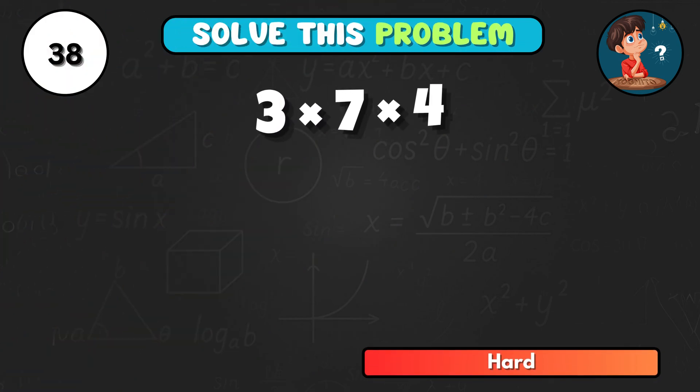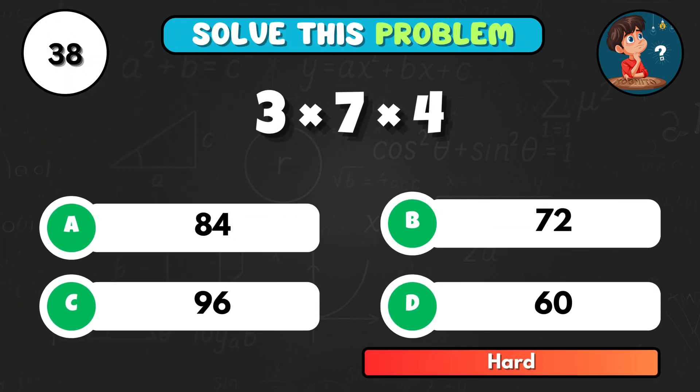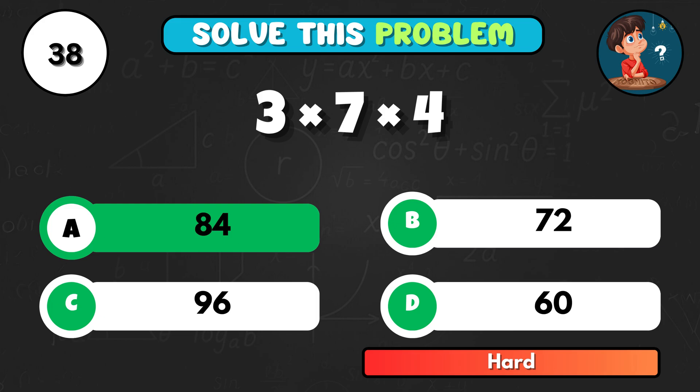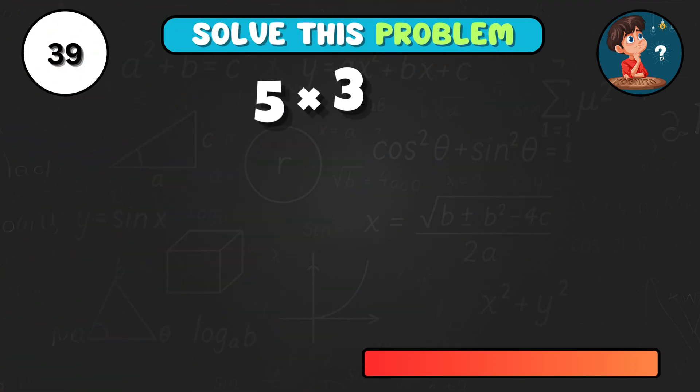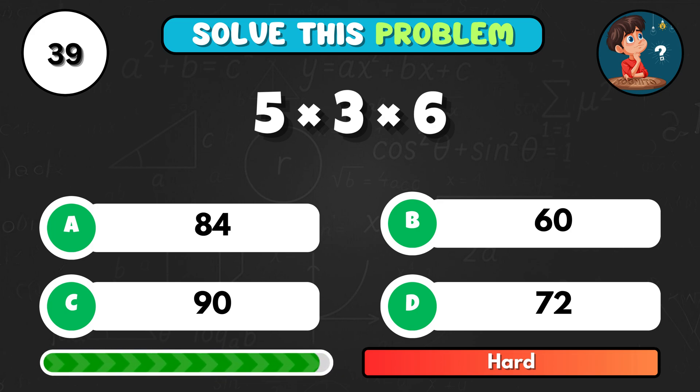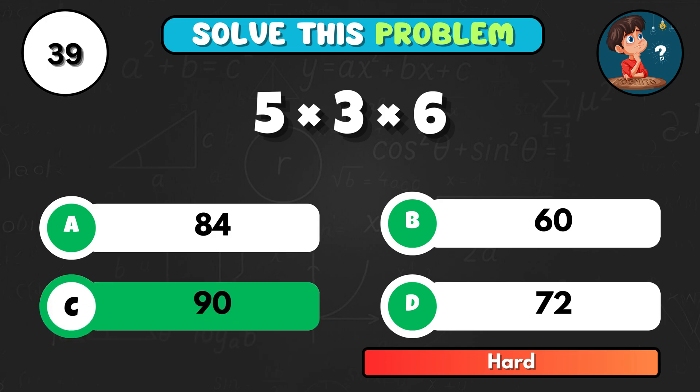Can you solve 3 times 7 times 4? It equals A, 84. Let's see if you get this. 5 times 3 times 6. That's C, 90.